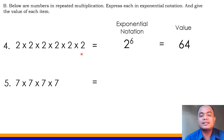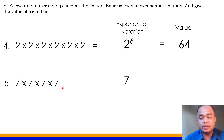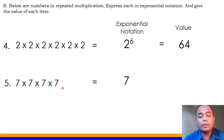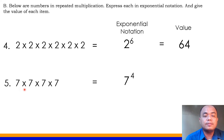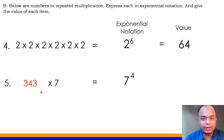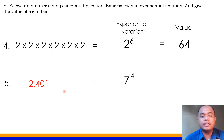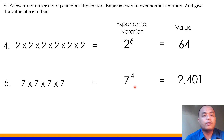Number 5 is 7 times 7 times 7 times 7. Our base is 7 because 7 is the factor repeatedly multiplied, and it is multiplied 4 times, so our exponent is 4. Let's get the value of 7 to the 4th power: 7×7=49; 49×7=343; 343×7=2,401. So the value of 7 to the 4th power is 2,401.